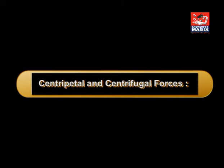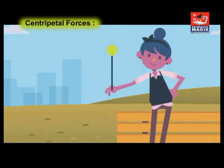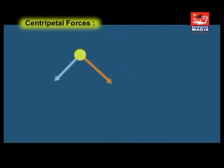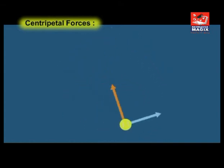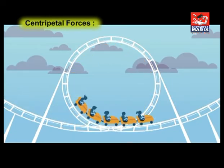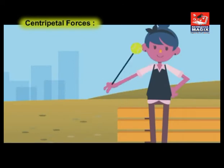Centripetal force: Circular motion is an accelerated motion, and this acceleration is directed along the radius towards the center of the circle. According to Newton's second law of motion, this acceleration must be produced by some force acting in the direction of acceleration — that is, along the radius directed towards the center. This force is called centripetal force. Centripetal force is necessary for circular motion to occur and always maintains the circular motion of the particle.